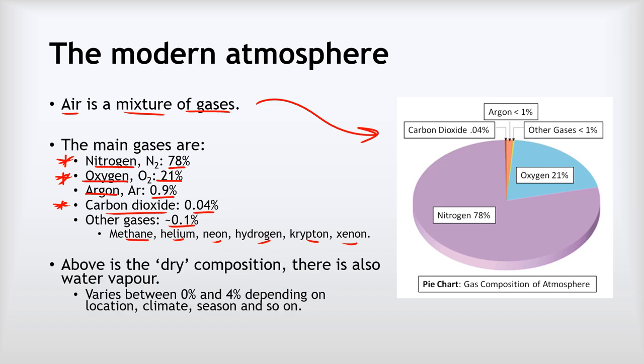Now you might have noticed that there's no mention of water vapour anywhere. That's because this is the dry composition of the atmosphere, by which we mean the composition ignoring water vapour. And the reason for that is simply that the concentration of water vapour in the air varies a lot between about zero and four percent depending on things like location, climate, season and so on.